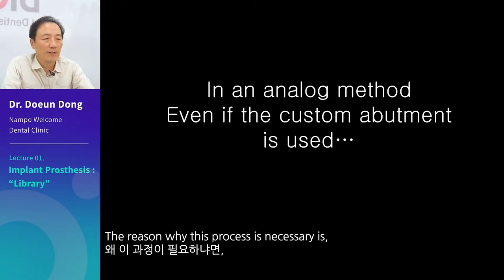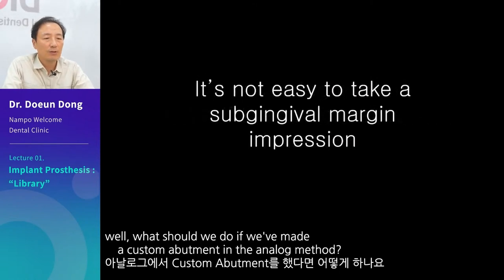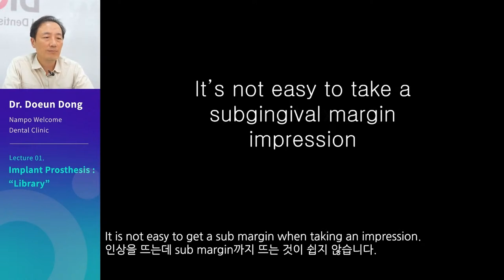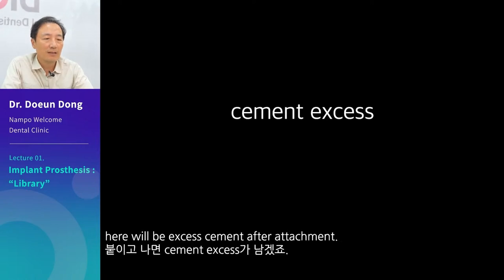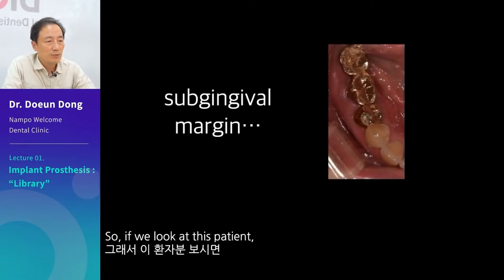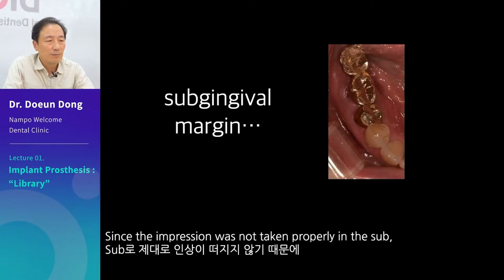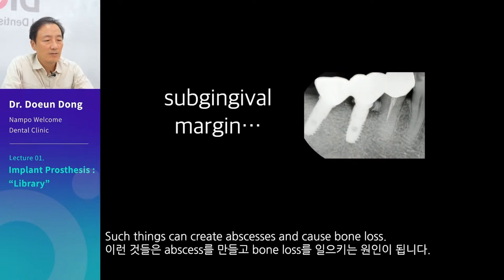The reason why this process is necessary is: what should we do if we've made a custom abutment in the analog method? We take an impression with it in the mouth and sometimes insert cords to secure a sub-gingival margin. It is not easy to get a sub-margin when taking an impression. Even so, there will be excess cement after attachment. If we look at this patient, we can see swelling of the gums around the implant in the sub-gingival direction. Since the impression was not taken properly in the sub, there will always be cement excess. Such things can create abscess and cause bone loss.